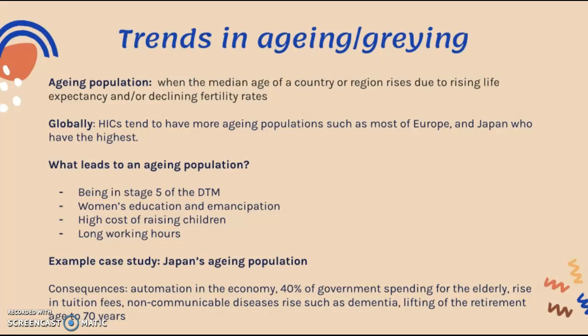That 40% of government spending allocated to the elderly could otherwise be used for education, healthcare, or economic development and infrastructure. Additionally, there is a rise in tuition fees due to a lower proportion of youth relative to elderly, a rise in non-communicable diseases such as dementia which puts strain on healthcare, and the lifting of the retirement age to 70 years in order to promote the workforce and employment in Japan.